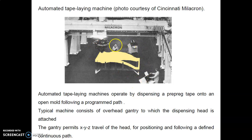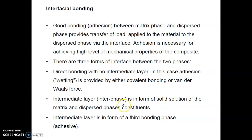Automated tape laying machines dispense prepreg tape onto an open mold following a programmed path. A typical machine consists of an overhead gantry to which the dispensing head is attached, with X-Y-Z positioning controlled by programming only.